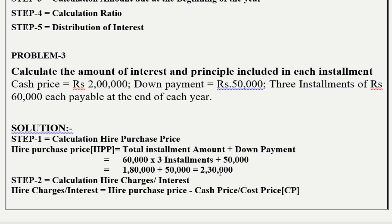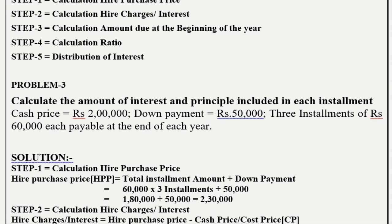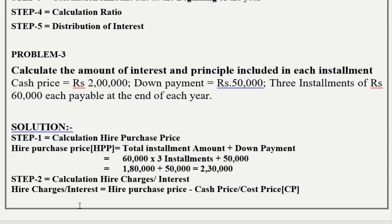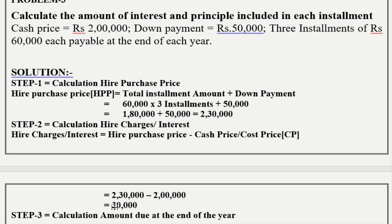Now we go to Step 2: Calculation of hire charges, that is interest. Interest equals hire purchase price minus cash price. Hire purchase price is Rs. 2,30,000 and cash price is Rs. 2,00,000. Therefore, Rs. 2,30,000 minus Rs. 2,00,000 equals Rs. 30,000. This Rs. 30,000 is called interest or hire charges.